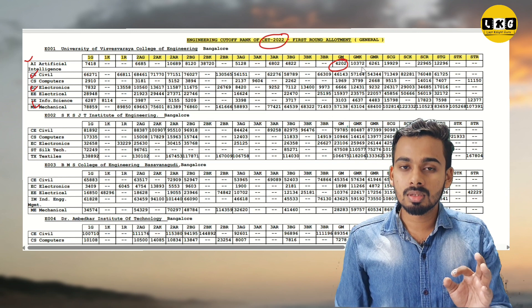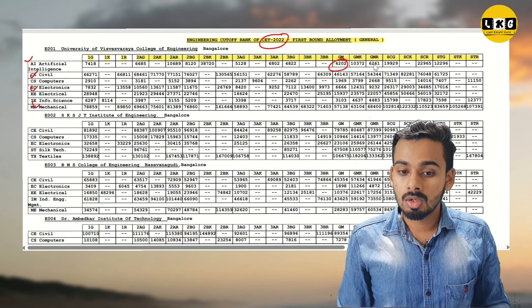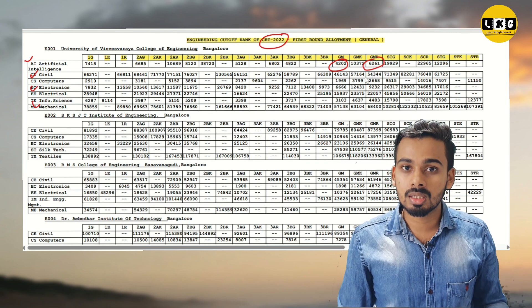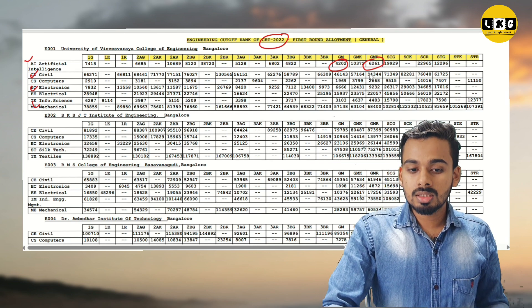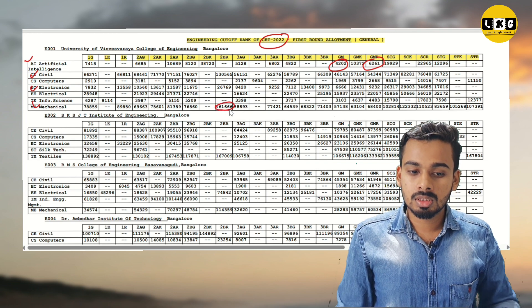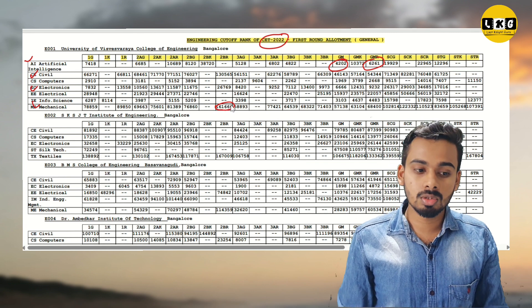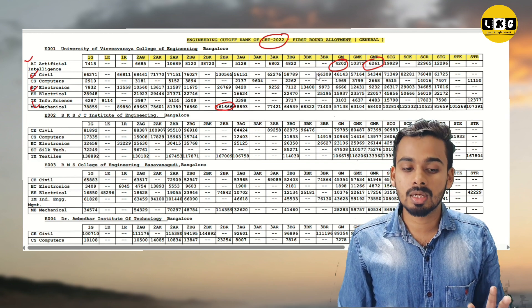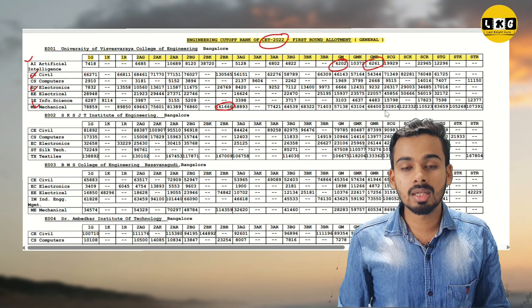General Merit Kannada Medium cutoff is around 70,000 ranking. That is with a Kannada medium certificate. General Merit Rural is around 6200. For the mechanical branch at Visvesvaraya College, you can get up to rank 1,61,000. The 2BR category cutoff for general merit is 57,000, and SC category is around 1,200 to 2,000.